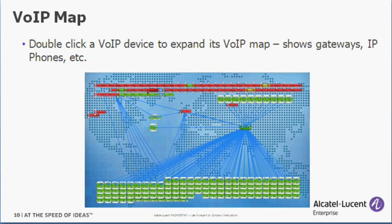Finally, if they click on a device that represents a voice over IP device such as a Cisco CUCM server or an Alcatel Lucent Omni PCX server, you drill down to a voice over IP map that shows all the related resources and objects associated with that device, such as gateways and IP phones.